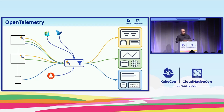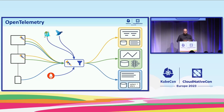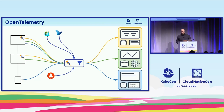First of all, the collector is one of the only components that can process telemetry regardless of the source — whether it comes from instrumentation libraries, the collector itself, or other tools, it can process all of that data. So any capabilities we add to the collector are more broadly useful than if we were to add those capabilities elsewhere. Additionally, the collector has the opportunity to correlate telemetry that comes from multiple sources.